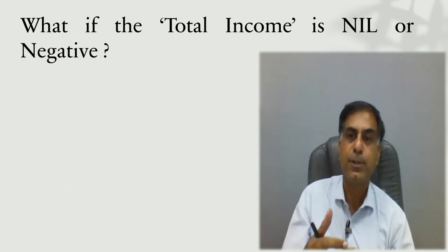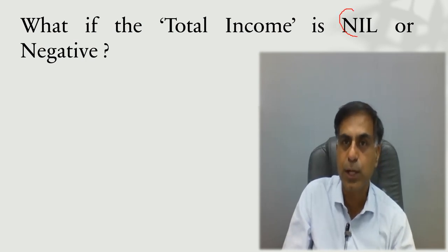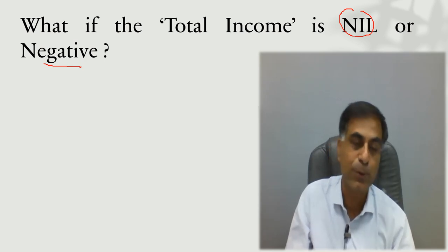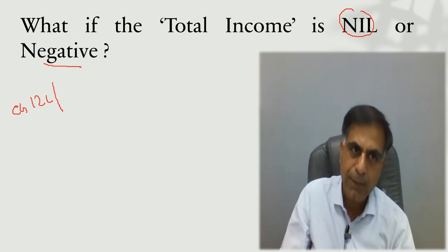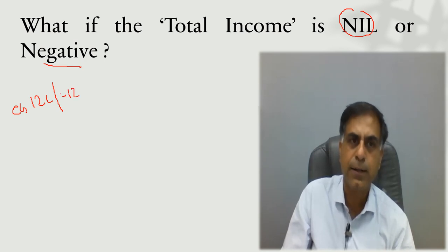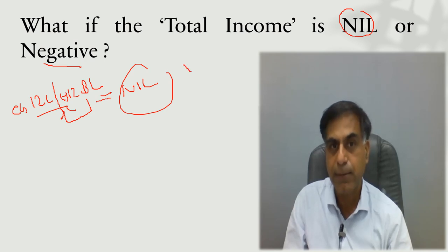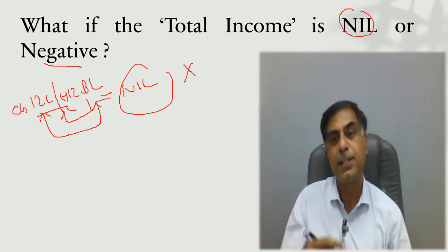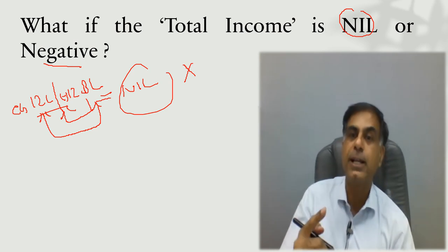Another important query: what if total income is nil or negative? Say under one head you have Rs. 12 lakh of capital gain income, and under another head you have business losses of Rs. 12 lakh. If the capital gain can be adjusted against the business loss, your total income is nil. Technically, it is not mandatory for such a person to file ITR — yet it is practical to do so, so the department can understand how the nil income arose.